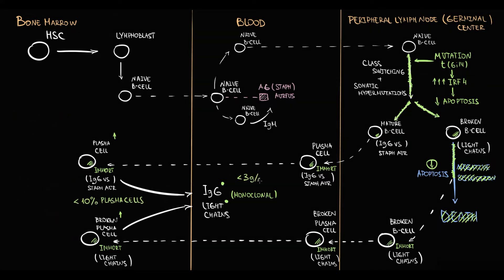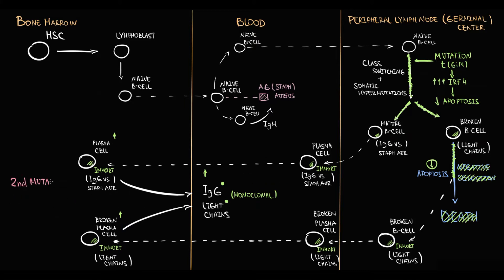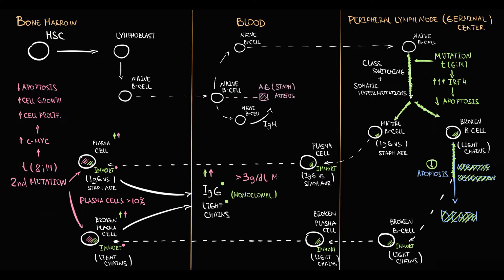Initially, a condition called monoclonal gammopathy of unknown significance develops, characterized by increasing amount of plasma cells in the bone marrow and increasing amount of monoclonal immunoglobulins in the blood. Then, if a second mutation occurs, this mutation will increase cellular proliferation rate and will make apoptosis even less likely. So the amount of plasma cells in the bone marrow increases, and simultaneously their production of monoclonal immunoglobulin will increase. This condition is called smoldering multiple myeloma.